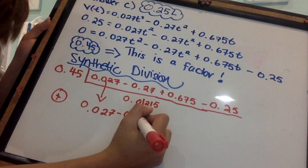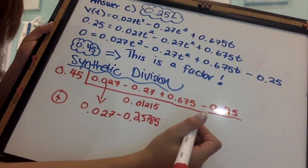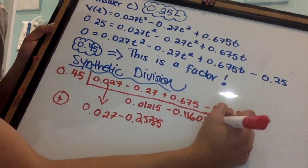Now, I am going to add the two numbers. Once I get my new number, I am going to repeat the steps all over again. Multiply by 0.45, bring to the top, and add the two numbers together.